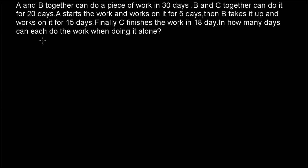Hi friends, welcome to today's class. Today's question is: A and B together can do a piece of work in 30 days. B and C together can do it in 20 days. A starts the work and works on it for 5 days. B takes it up and works on it for 15 days. Finally, C finishes the work in 18 days. In how many days can each do the work when doing it alone?